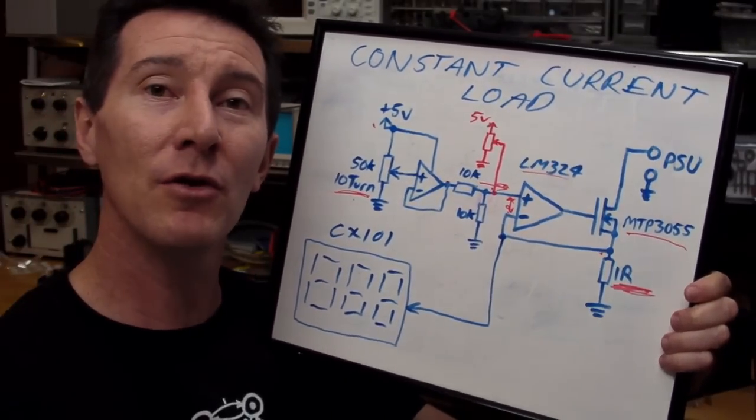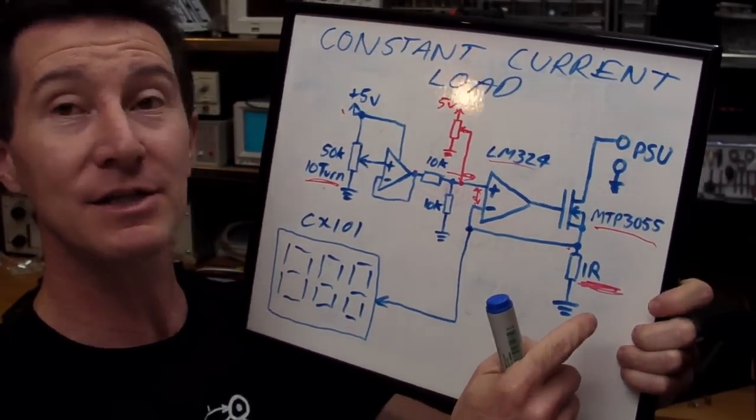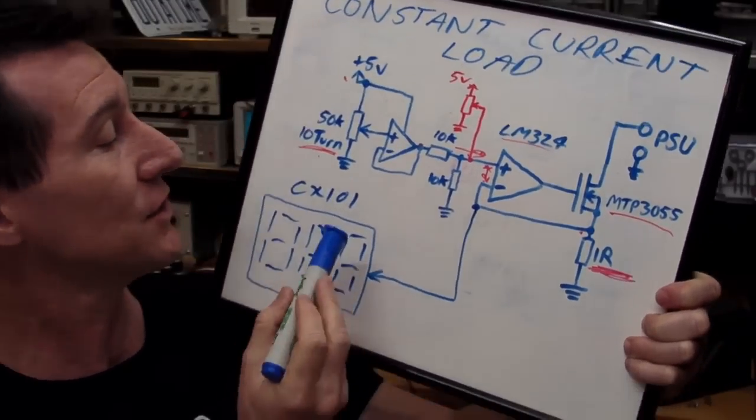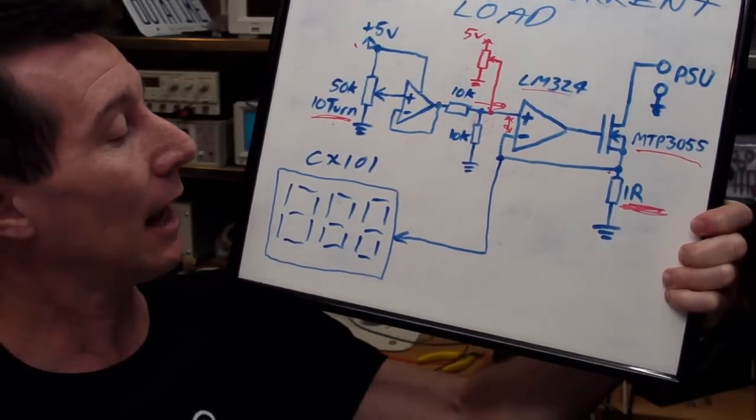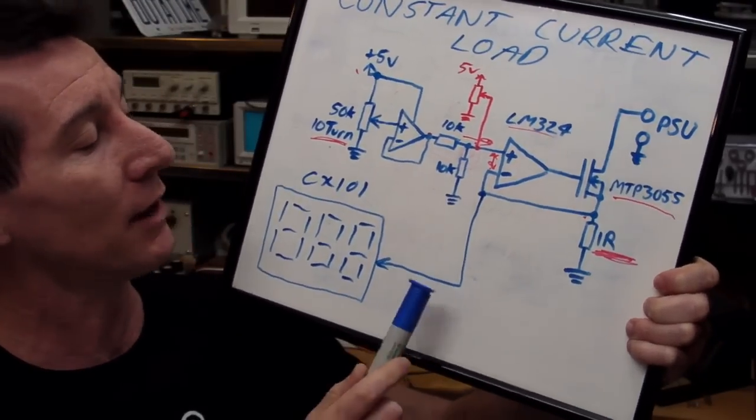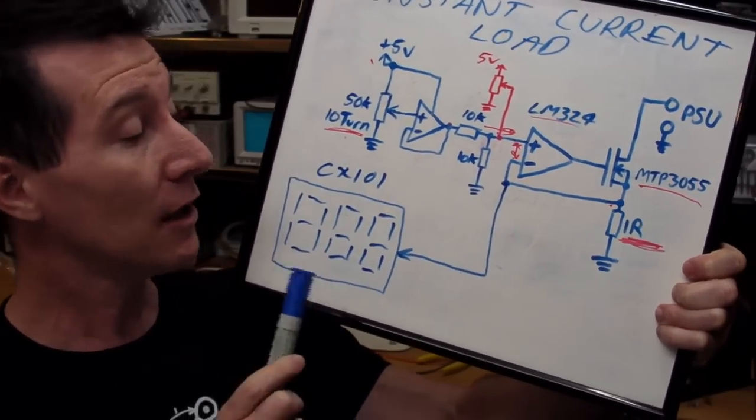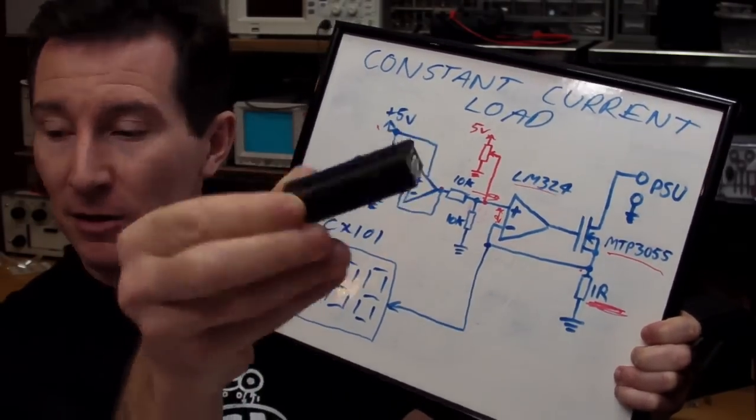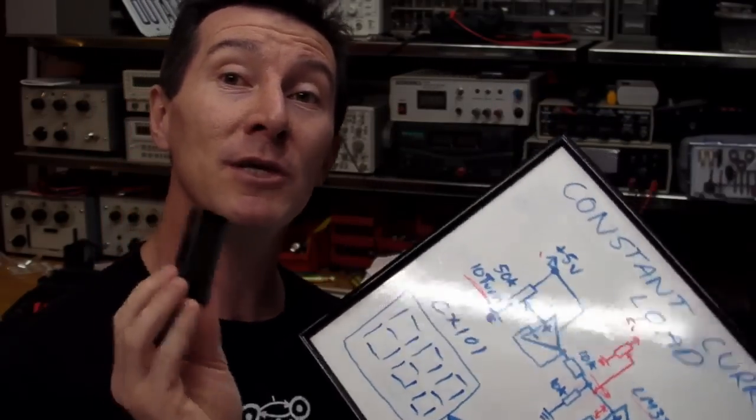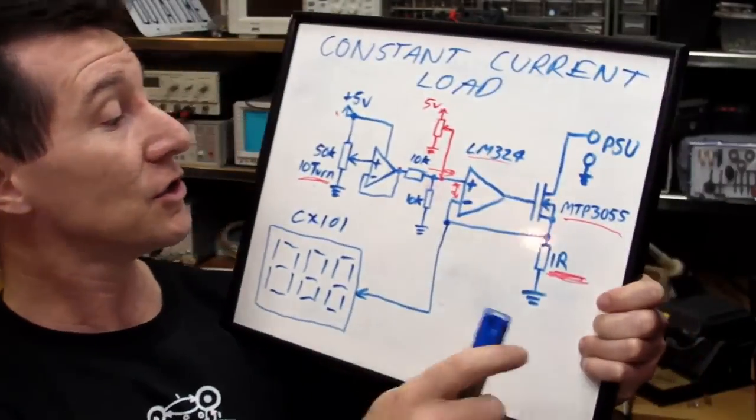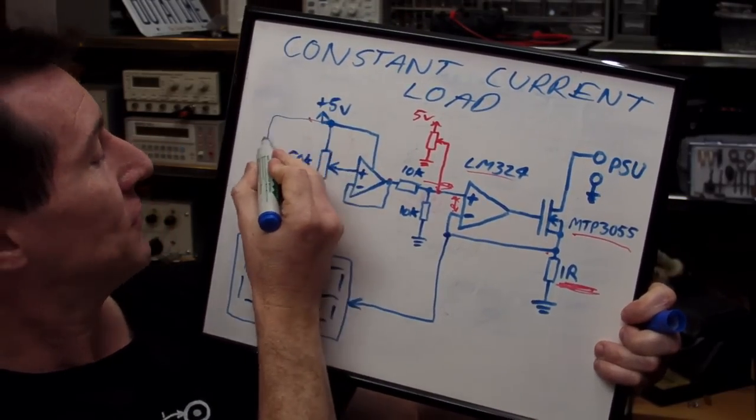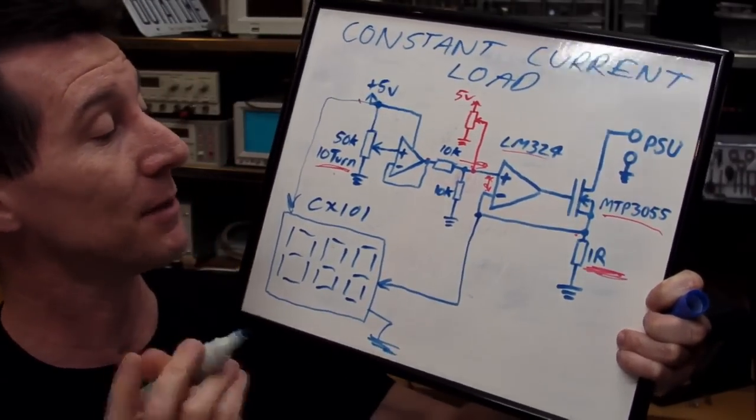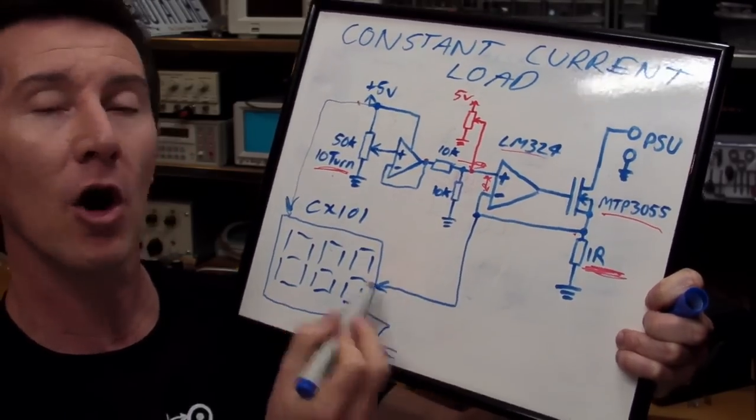And I also thought it'd be quite neat to include a little panel meter as well on there to show me my set current, so that I didn't have to use my multimeter in series to actually measure the current. It just so happens in my junk bin, I've got a whole bunch of CX-101, very nice little 3.5-digit panel meters, 0.1% accurate, really quite nice. They can be used in a grounded configuration. The thing with these little panel meters, some of them are not designed to be used for a common ground connection. So, you can't just hook them up and then power it from your 5 volts and then share a common ground. Some of them will not work. It's a real trap for young players, so just be careful.